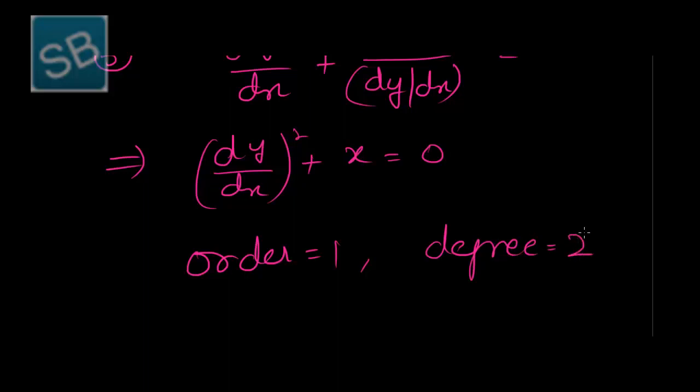That was all about the order and degree of a differential equation. One important point: if the given equation is not in polynomial form, we cannot find its degree. The degree is always a whole number. If the equation contains radicals or fractional powers in the derivative terms, it is not in polynomial form, and therefore the degree cannot be defined.